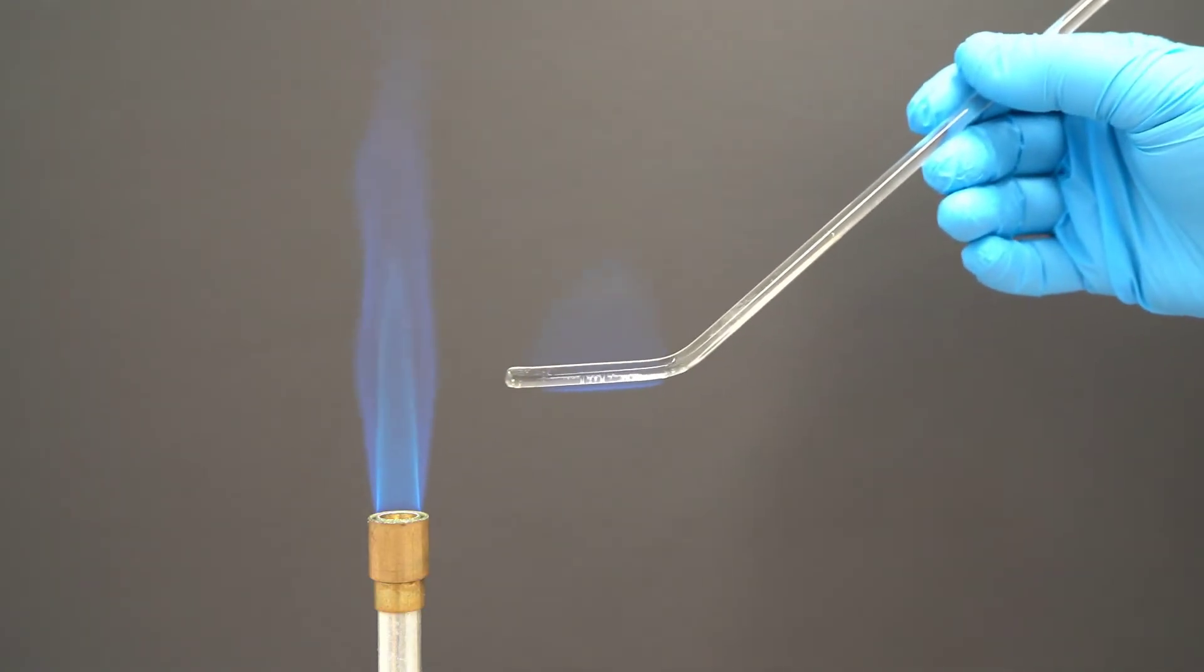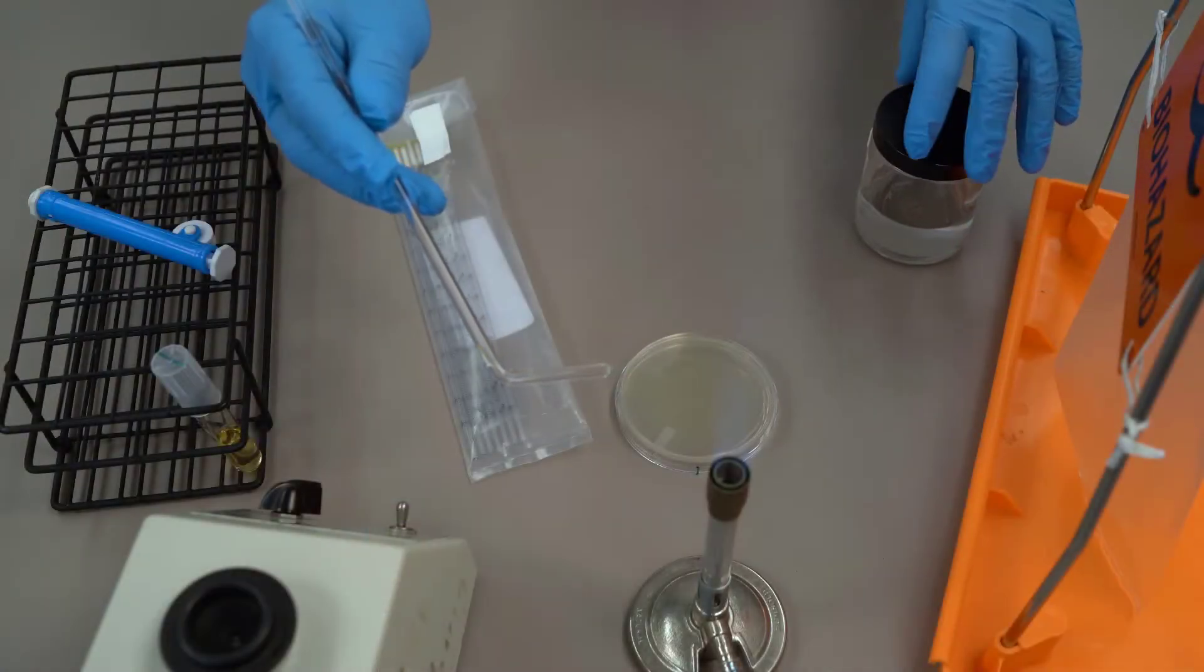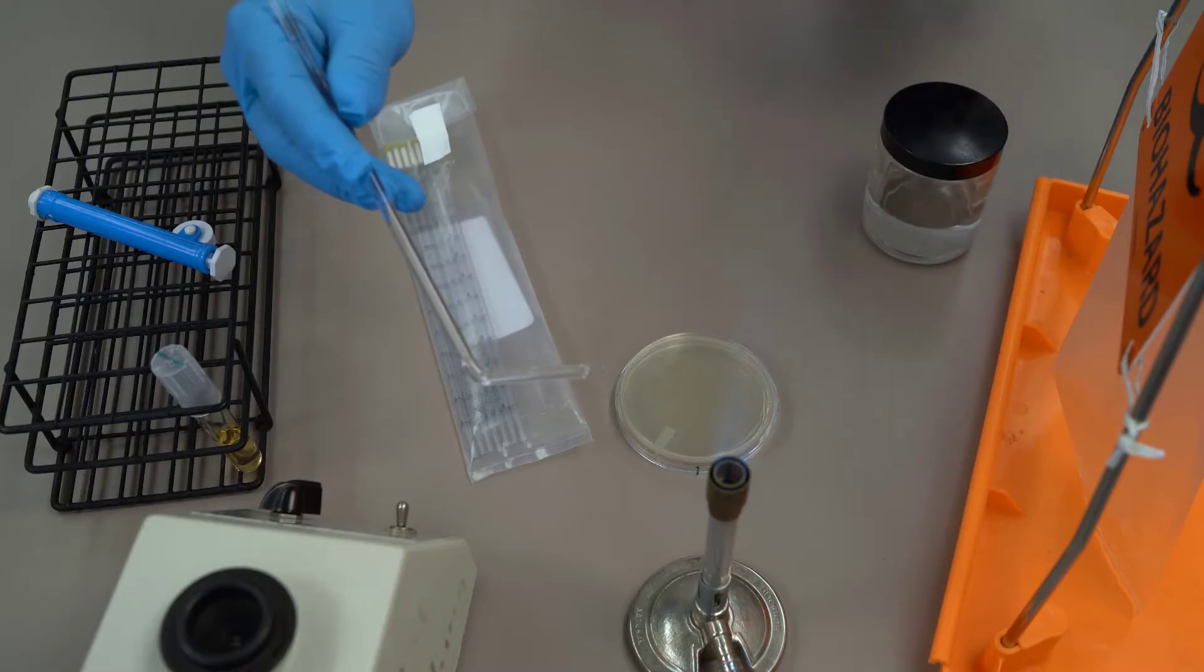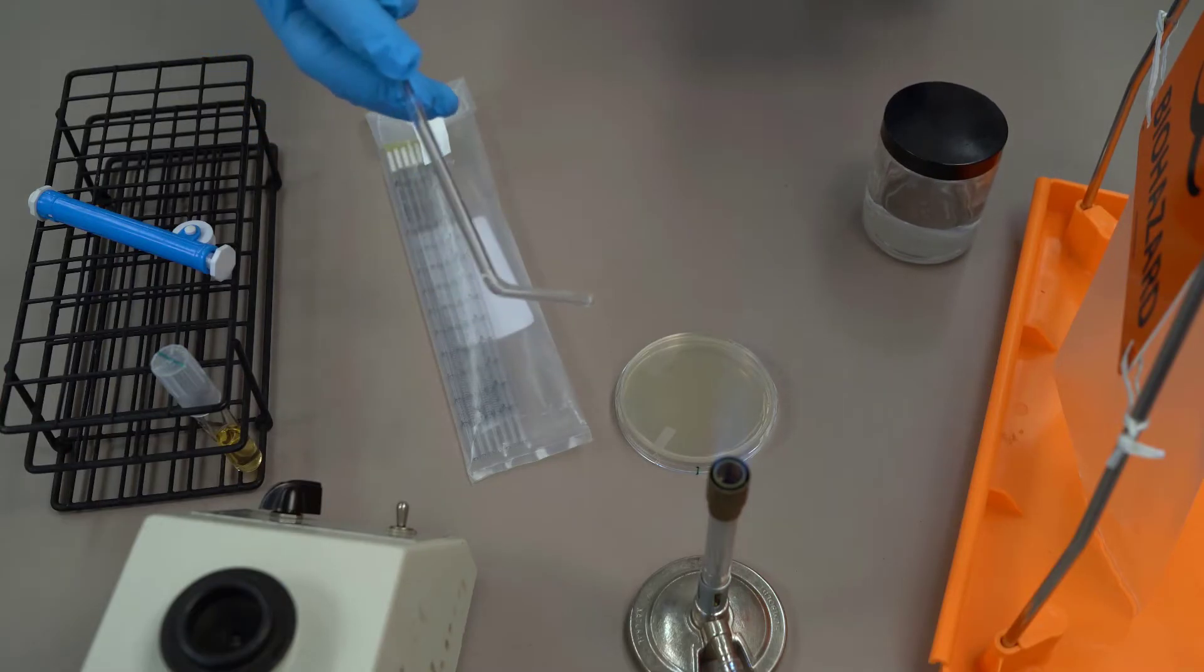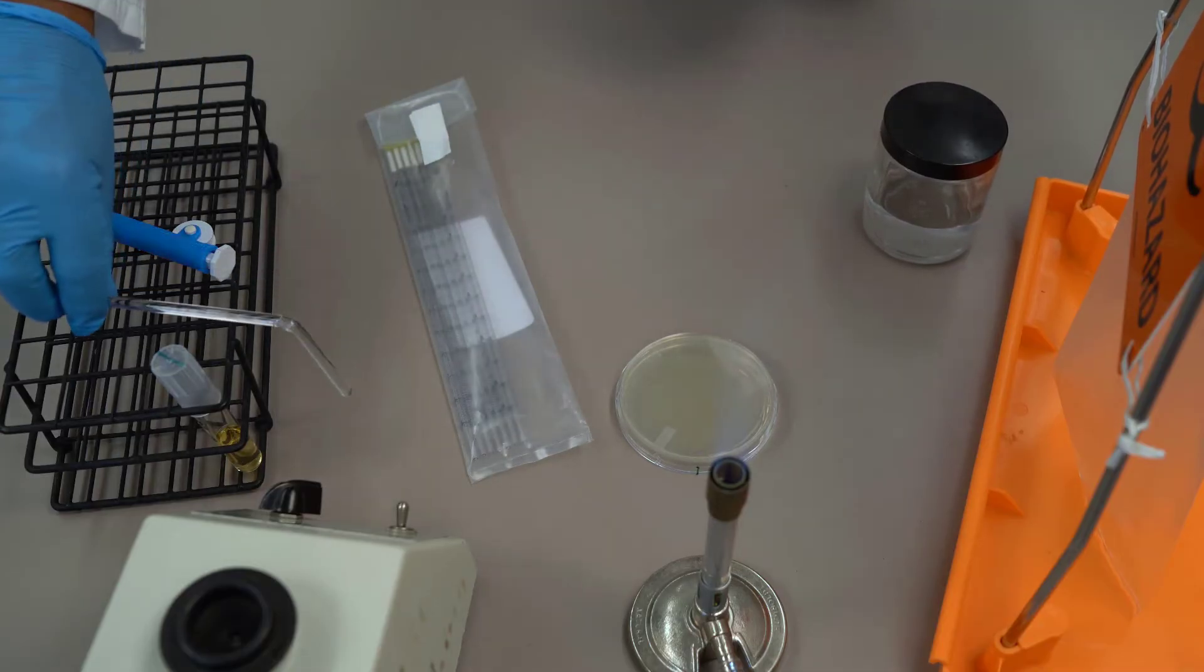We don't want to hold the glass rod in the flame because it'll get super hot, and that will kill the bacteria that we're spreading. So the alcohol is used to kill the bacteria. The flame is used to burn off the alcohol. I'm going to put the glass rod on the rack.